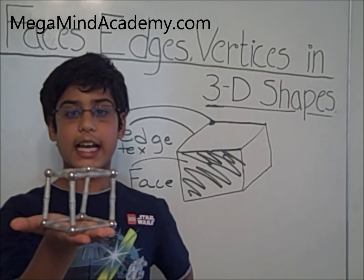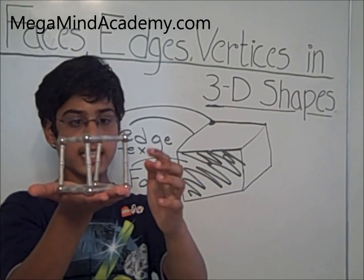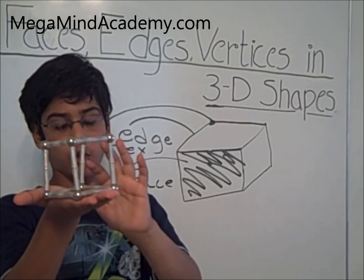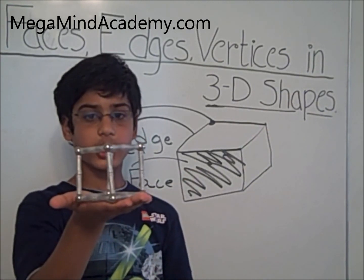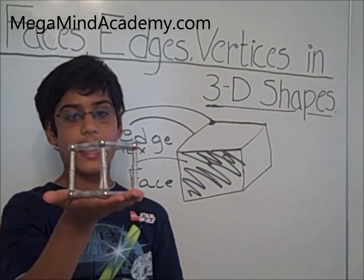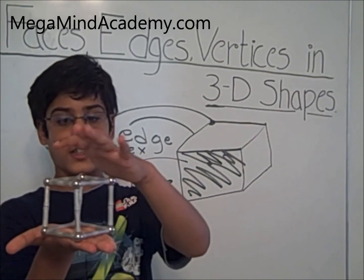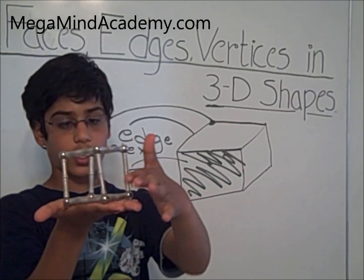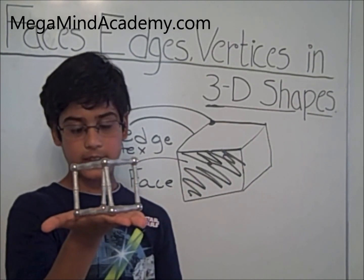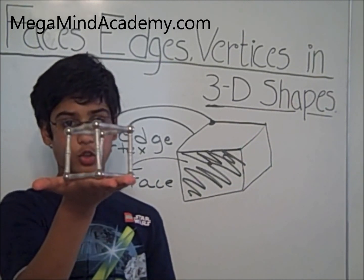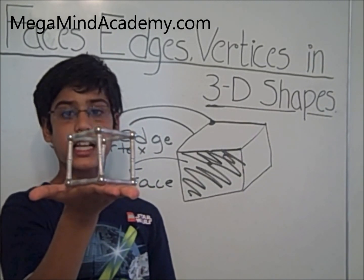Now let's count how many edges there are. 4 on the top: 1, 2, 3, 4. 4 on the sides: 1, 2, 3, 4. And 4 on the bottom: 1, 2, 3, 4. This cube has 6 faces, 12 edges, and 8 vertices.